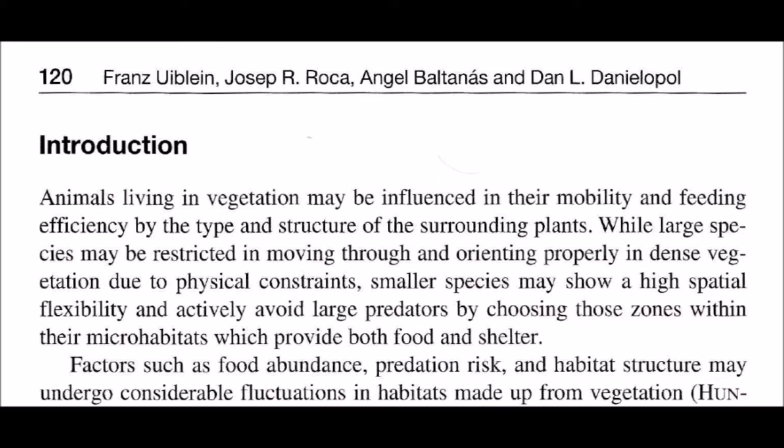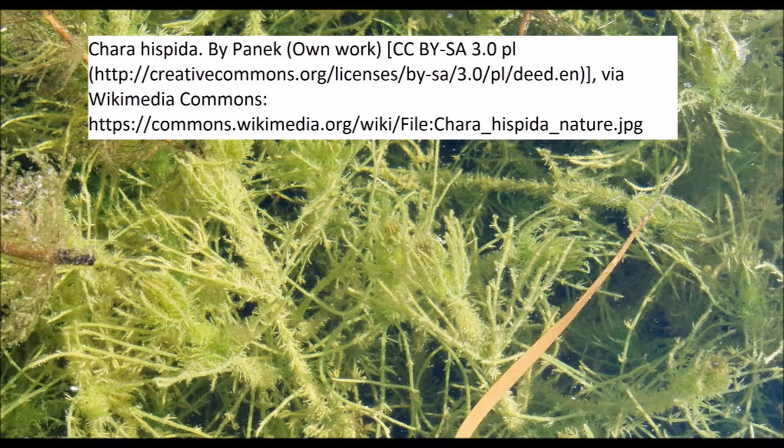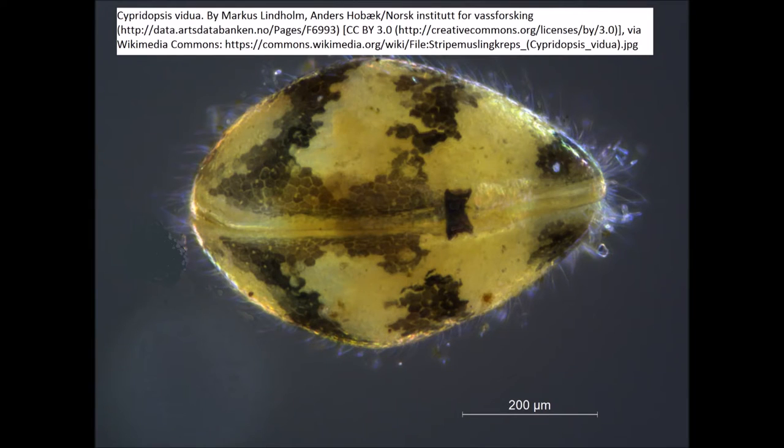Now here are some snippets from the introduction of the study that I'm summarizing. Quote: Animals living in vegetation may be influenced in their mobility and feeding efficiency by the type and structure of the surrounding plants. While large species may be restricted in moving through and orienting properly in dense vegetation due to physical constraints, smaller species may show a high spatial flexibility and actively avoid large predators by choosing those zones within their microhabitats which provide both food and shelter.